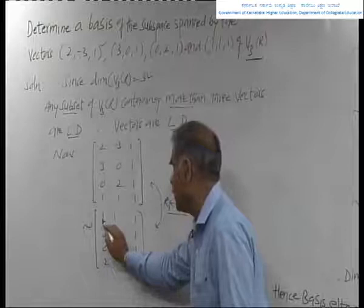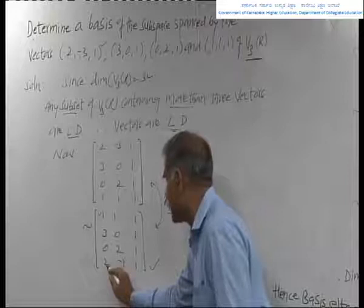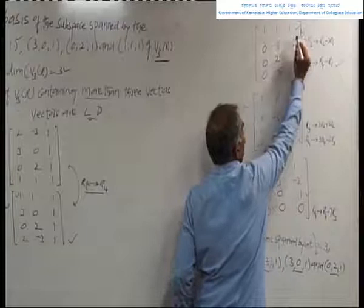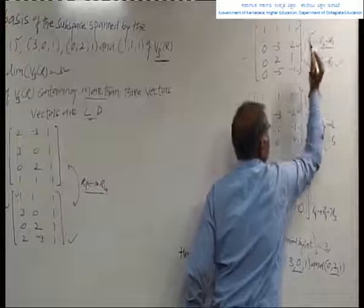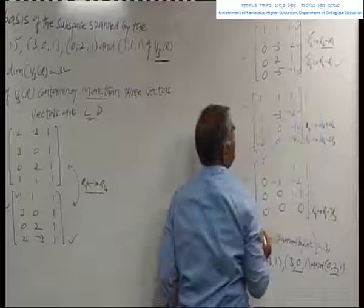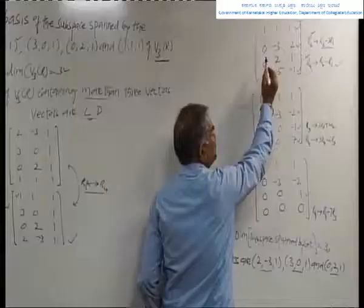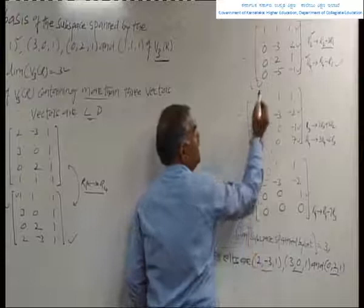We need to reduce the element 3 to 0 in the second row and 2 to 0 in the fourth row using the first row's first column element. Operating on the second row: R2 is replaced by R2 minus 3R1. Operating on the fourth row: R4 is replaced by R4 minus R1. After this operation, the second row becomes (0, 3, -2) wait — applying R2 minus 3R1, we get (0, 3, 0) and R4 minus R1 gives (0, -5, -1) ... (0, -3, -2) element obtained, and (0, -5, -1) for fourth row.